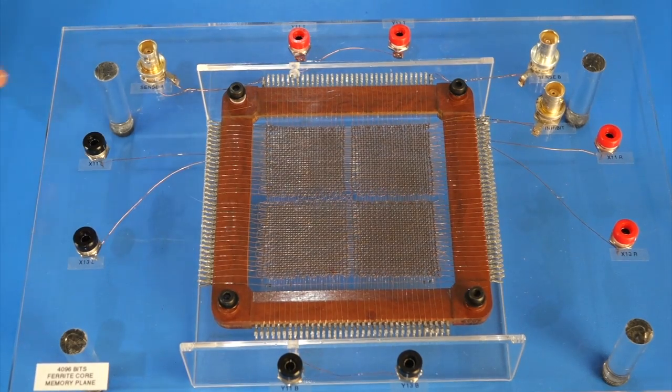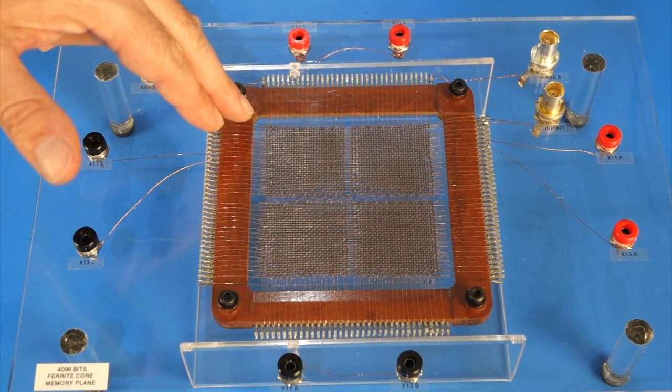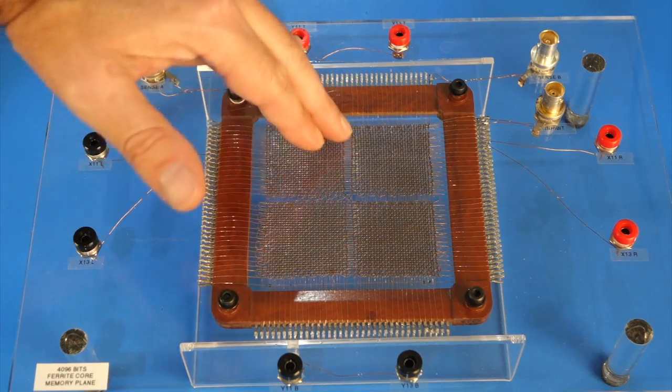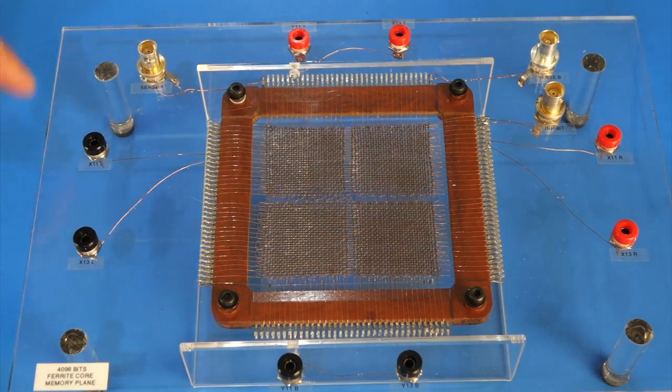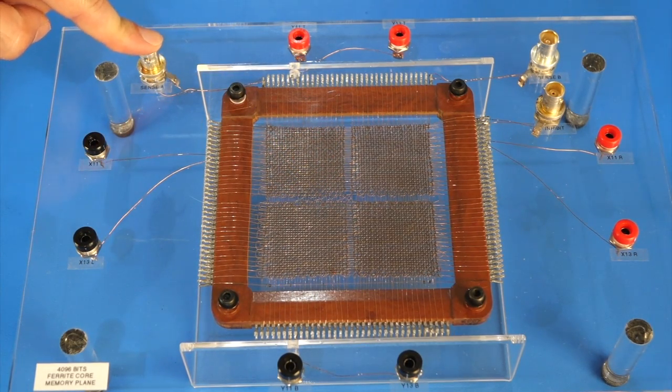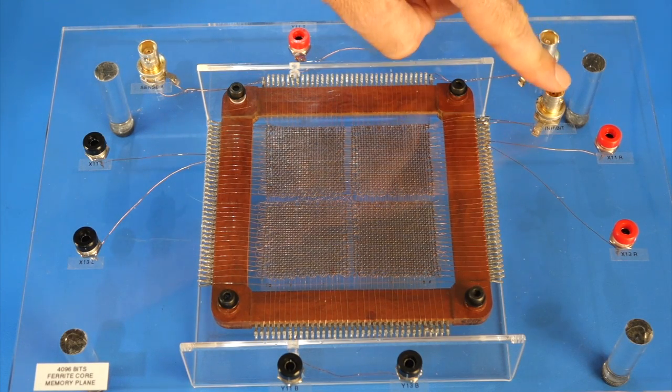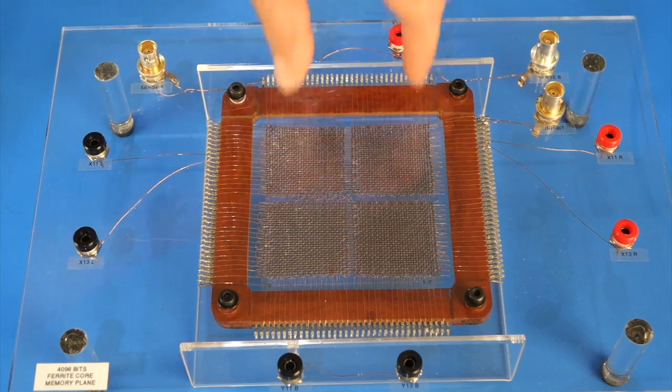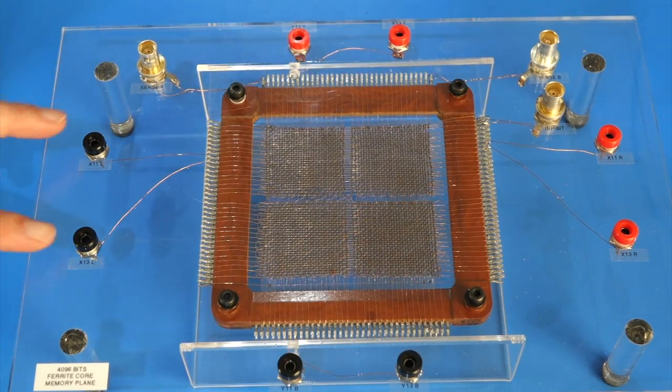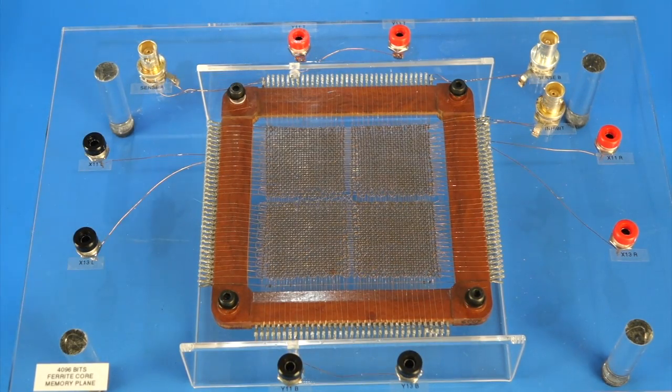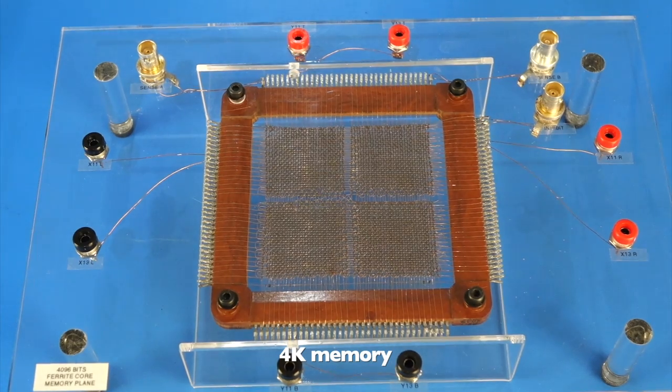So the way I wired this one, I picked two X and Y lines that are in this quadrant, over here. So I can read them with sense A. I nevertheless have sense B over here, I also have inhibit. So two Y and two X. So we can flip four bits in that giant 1K memory.